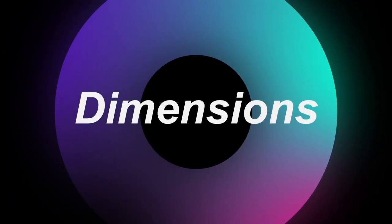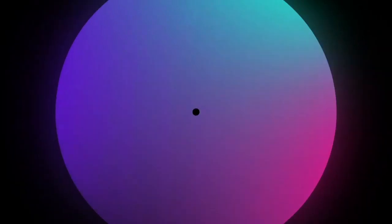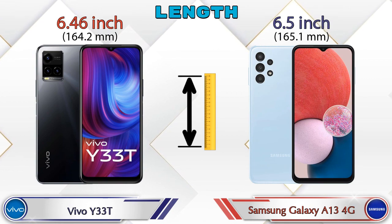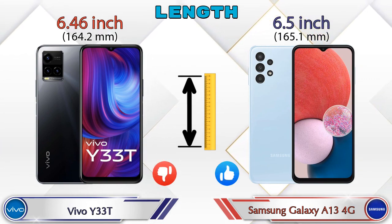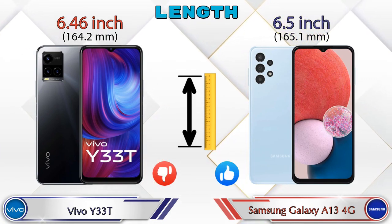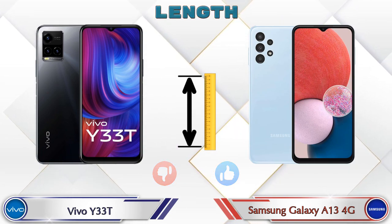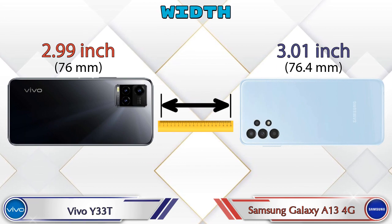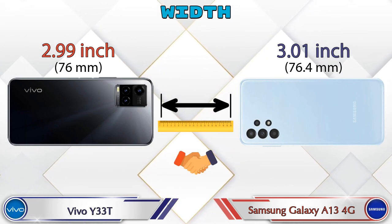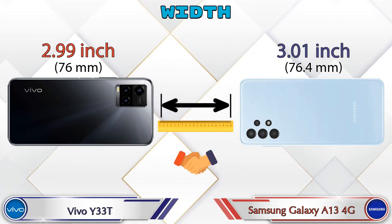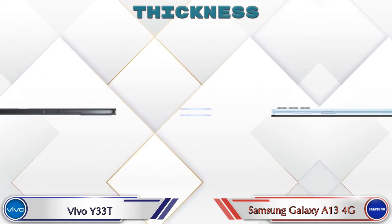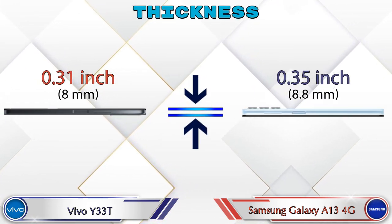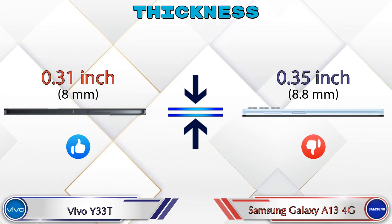Now let's check the details about dimensions. Talking about the length: the Y33T is 6.46 inches and the Galaxy A13 4G is 6.5 inches. Width: the Y33T is 2.99 inches and the Galaxy A13 4G is 3.01 inches, which are almost the same. Talking about thickness, the Y33T is 0.31 inches and the Galaxy A13 4G is 0.35 inches, which is thicker than the Y33T.